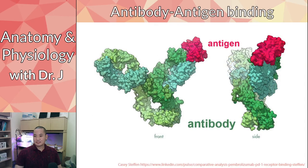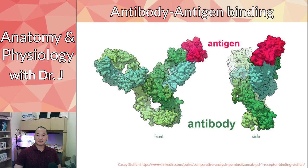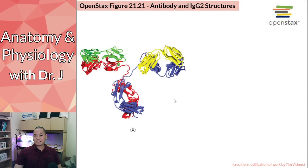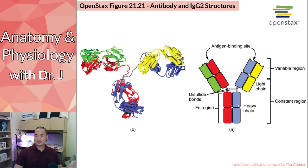The binding is not via covalent bonds; it's a combination of many different chemical bonds at the site between the antibody and antigen. Here's another depiction showing a sample antibody and antigen — the antigen is in red — and the antibody only binds to it at a specific site. The rest of the antigen surface does not fit the antibody.